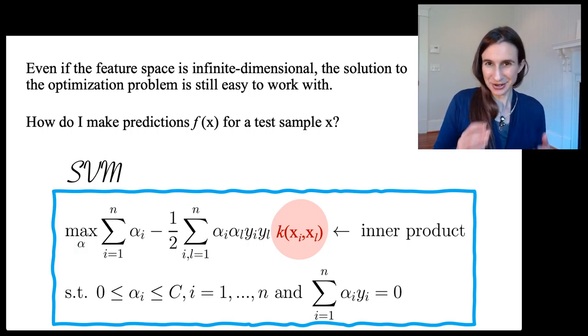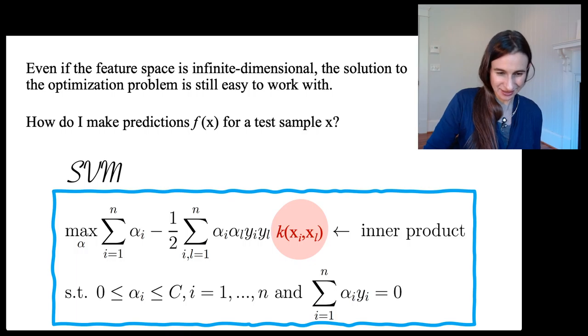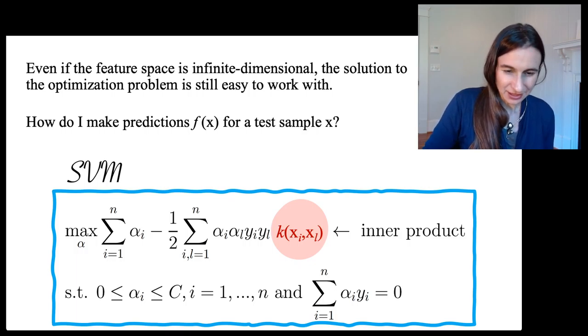I can't take x and map it to this feature space because I don't even know what the feature space is. What that means is that everything has to be done through the kernels.